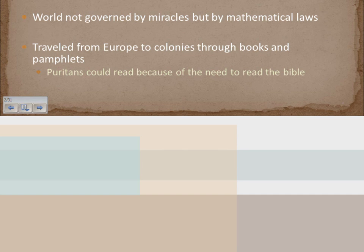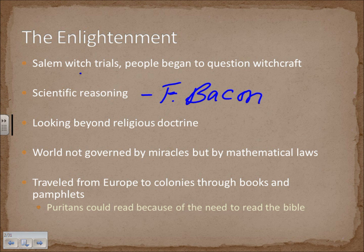These Enlightenment ideas traveled from Europe to America. Oddly enough, for all their fanaticism, the Puritans placed an emphasis on the ability to read so that people could read the Bible. This backfired in terms of Enlightenment thought, because this literacy caused people to read the books and pamphlets of the Enlightenment era, spurring the Enlightenment in America.